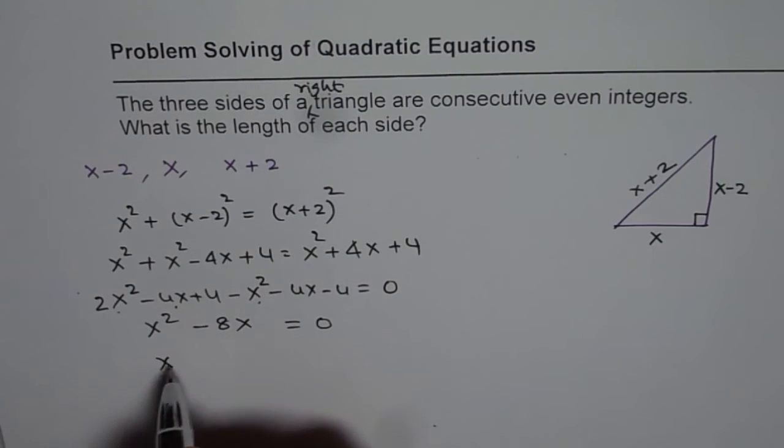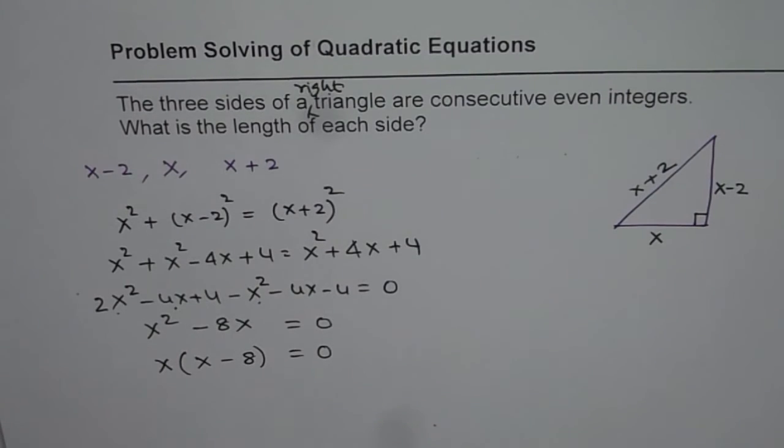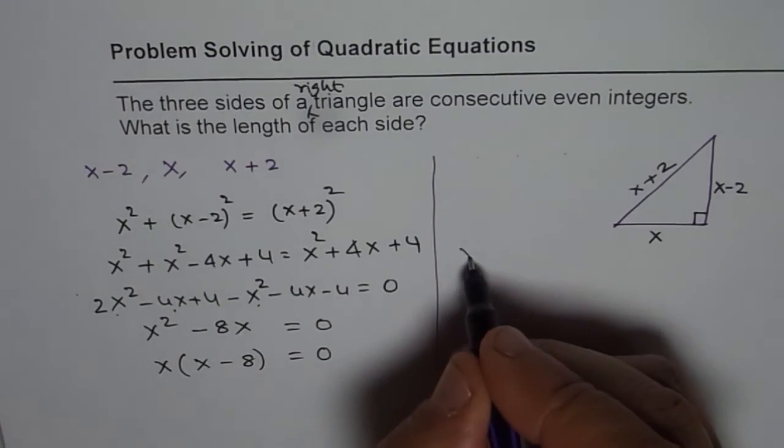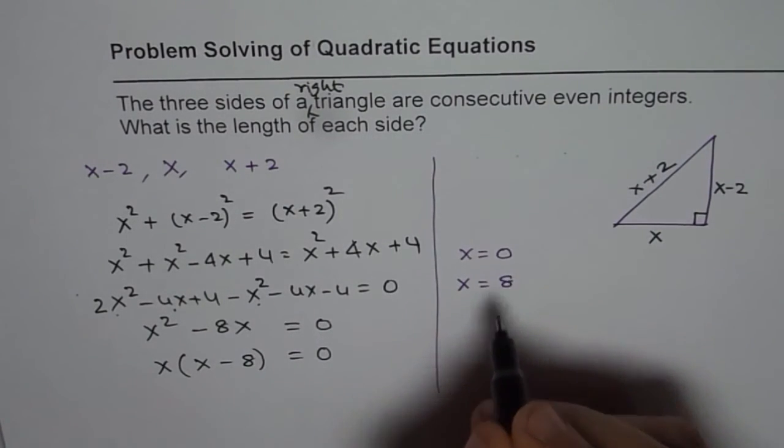Now, we can factor x, so we get x(x minus 8) equals 0. That means we have 2 solutions. Either x equals 0 or x equals 8.